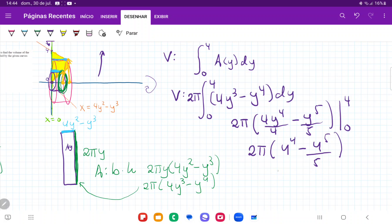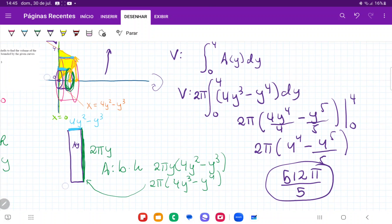So if we calculate this, this is going to give us, let me put that in my calculator. This gives me 512 pi over 5. So yeah, that is the volume that I get.